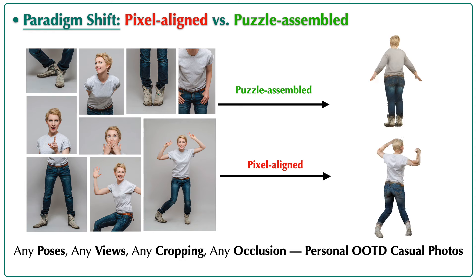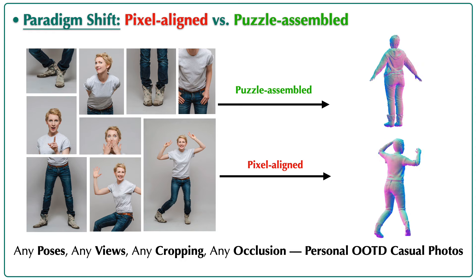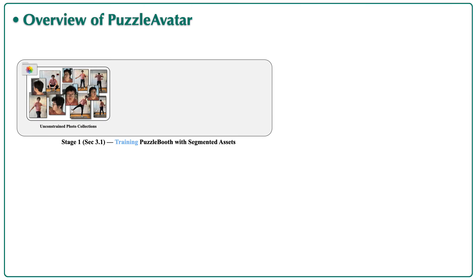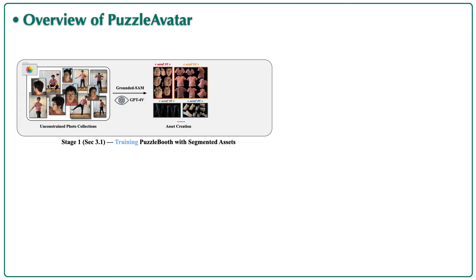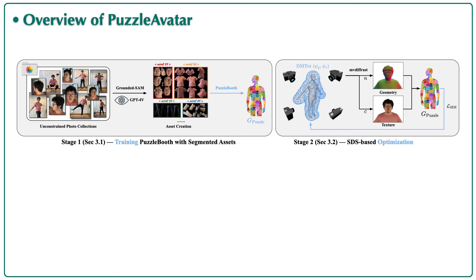We refer to this new paradigm as Puzzle Assembled Reconstruction. Here we detail the overview of Puzzle Avatar. In the first stage, unconstrained photo collections are captioned and segmented to generate personalized puzzle pieces, which are then used to train Puzzle Booth. In the second stage, the APO's tetrahedral body mesh, along with its texture, is optimized using multi-view SDS loss.